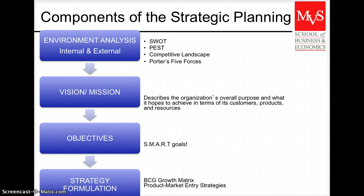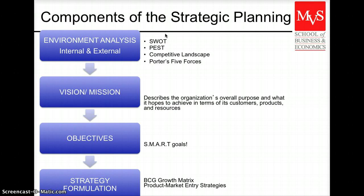But how do we go about developing the strategic planning? What are the different steps that we are going to be taking? First, we're going to be understanding the environment that we're going to operate in. It is also called situation analysis, and we're going to analyze it from an internal point of view — what are my company's strengths and weaknesses — but also from an external point of view. What are the elements outside the firm that might affect my company either positively or negatively? The external elements, the opportunities and threats, are not under the control of managers, but once we know about them, we can plan around them. This is what we call a SWOT analysis.